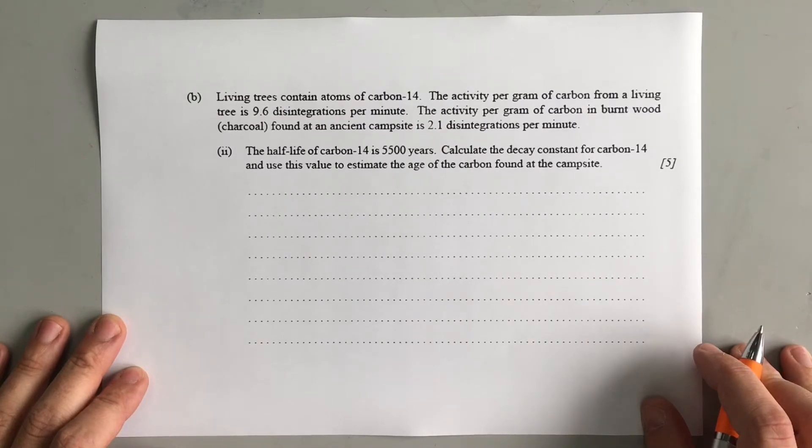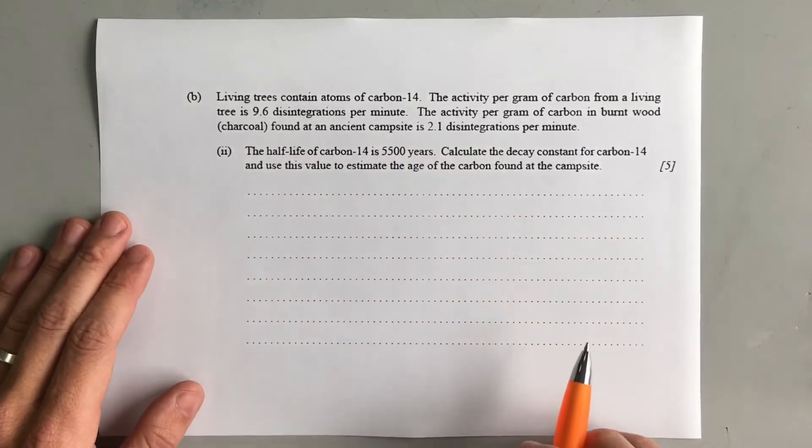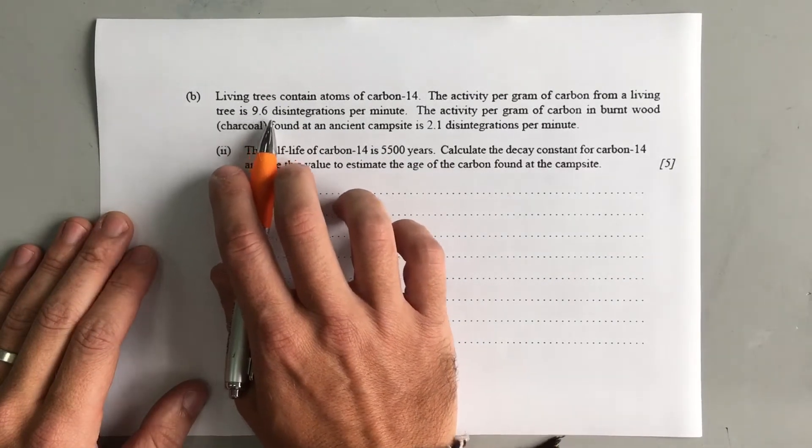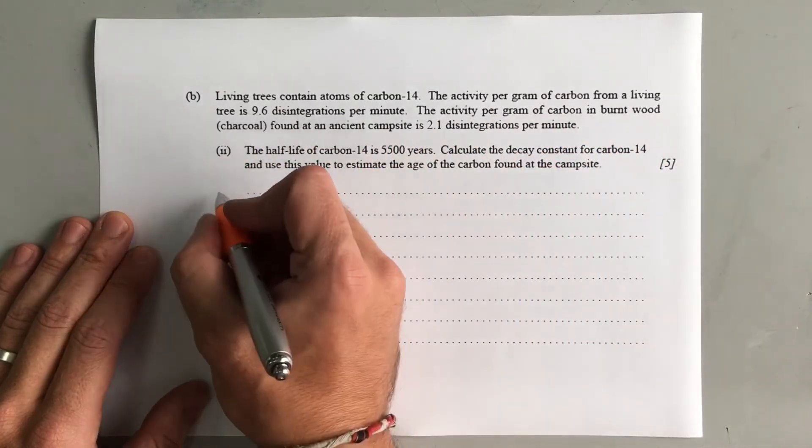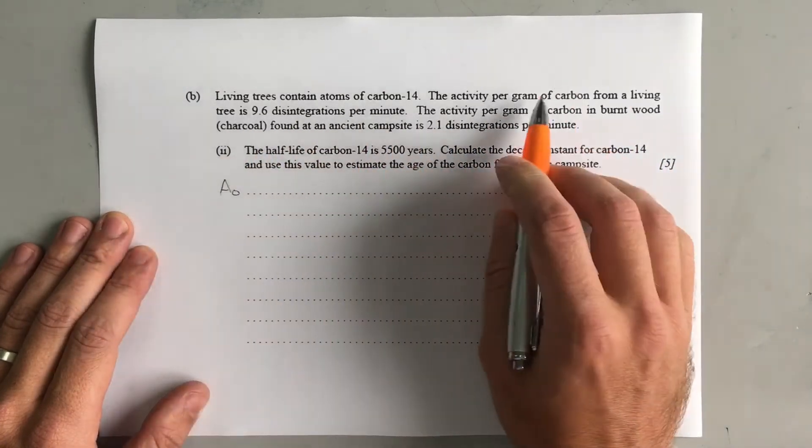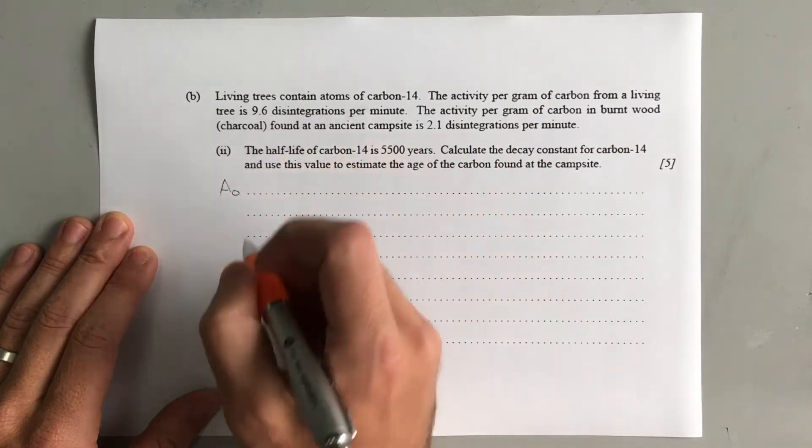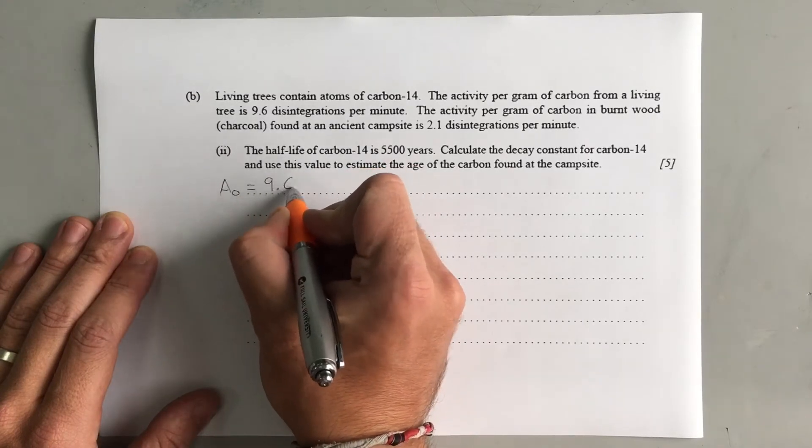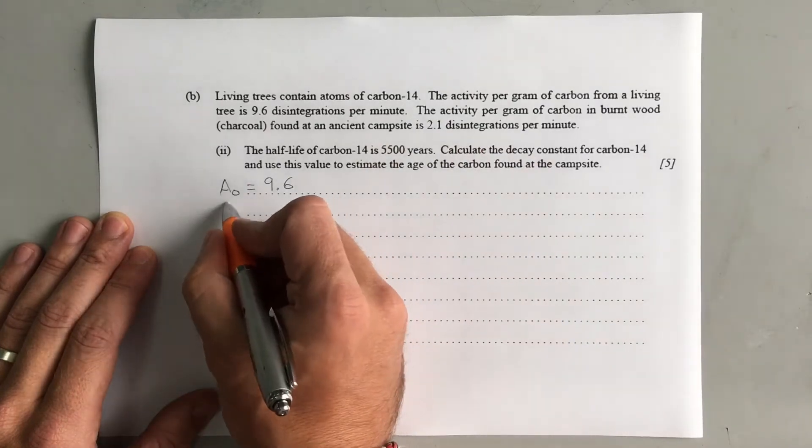Okay, so the first thing that we want to do with any sort of maths question is write down the stuff that we know. So we know at the moment that the starting activity here, A₀, which is the activity from a living tree, is 9.6 disintegrations per minute. Now we'll talk about units in a second, but for now we'll just put 9.6. Then we've got the activity later on, so A in however many thousand years is 2.1 disintegrations per minute.